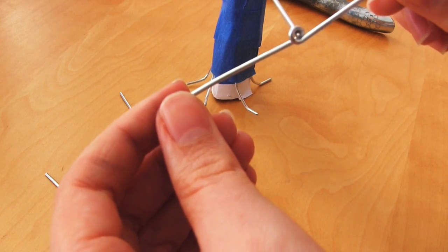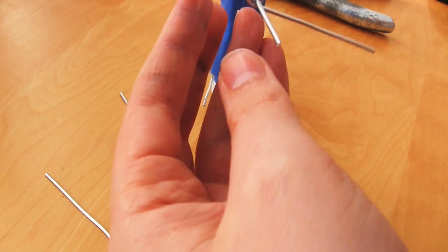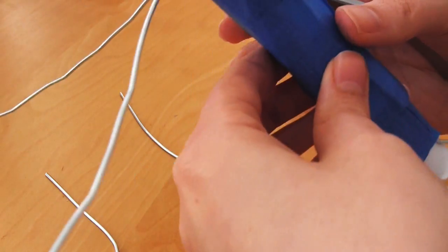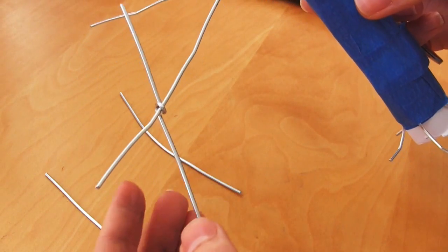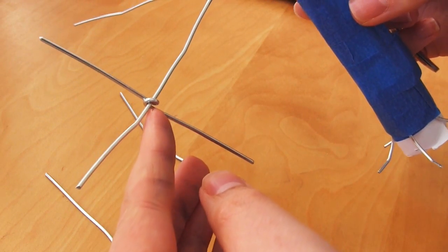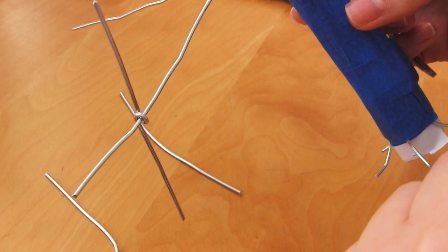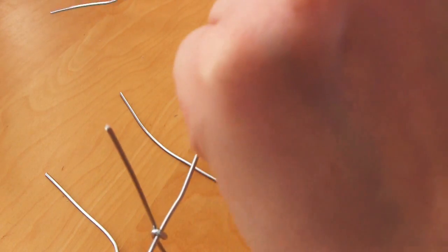For each of these smaller branches, I cut the length and then used my pliers to make a loop in the center. I fed this loop over one of the larger branches and tightened up the loop to try and keep that smaller branch in place.